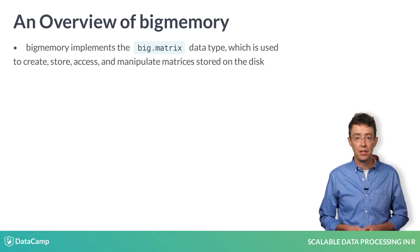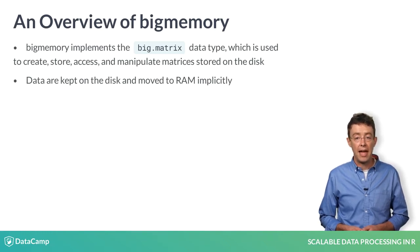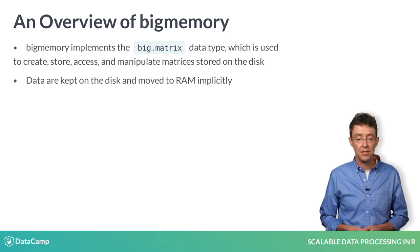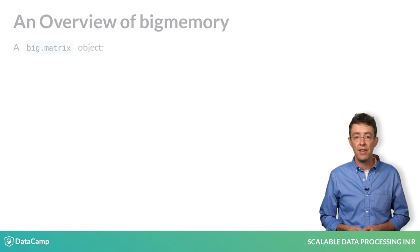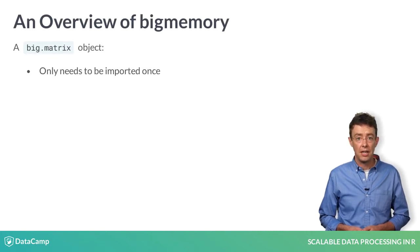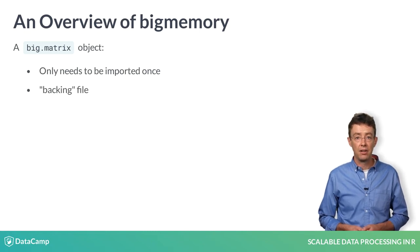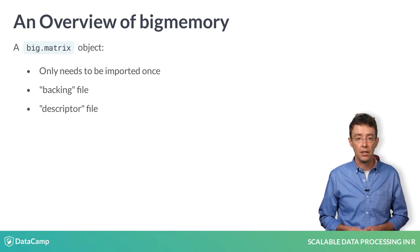The movement of data from the disk to RAM is implicit, meaning that users don't have to make function calls to move the data. The package detects when needed data resides on disk and moves it for them. Another advantage of using a big matrix object is that, since it is stored on disk, it only needs to be imported once. You read in a big matrix object similar to reading a data frame. However, doing this creates a backing file that holds the data in binary format, along with a descriptor file that tells R how to load it. In a subsequent session, you simply point R at these two files and they are instantly available, without having to go through the import process again.